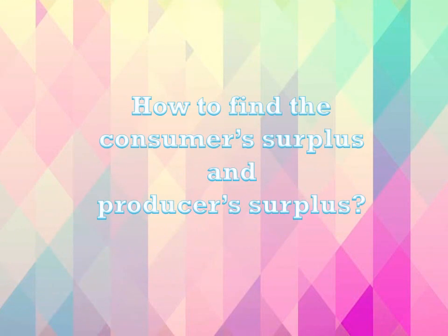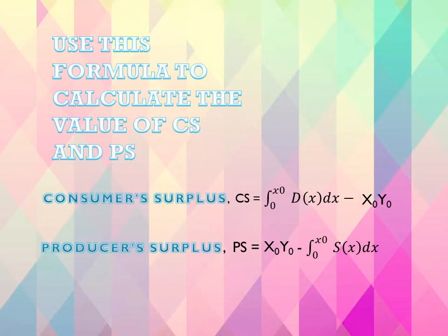To find the consumer surplus, use the formula: CS equals the integral from 0 to X-naught of DX minus X-naught times Y-naught, where (X-naught, Y-naught) is the market equilibrium point. For the producer surplus formula, PS equals X-naught times Y-naught minus the integral from 0 to X-naught of the supply function SX dx.